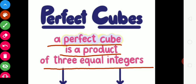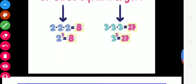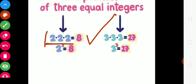A perfect cube is a number formed by multiplying one whole number by itself 3 times. For it to be a perfect cube, three equal integers — the same number — must appear in the prime factorization as a triplet. For example, 2 × 2 × 2 = 8, so the prime factor of 8 is in triplet form, therefore 8 is a perfect cube.